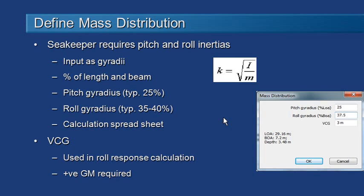As well as the geometry of the hull, we need to define the mass distribution. SeaKeeper lets you input that as a mass radius of gyration or a gy-radius, typically entered as a percentage of the length and beam. So that's a non-dimensionalized version. The normal gy-radius is the square root of the mass moment of inertia divided by the mass, and we then calculate that as a percentage of length and beam.